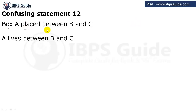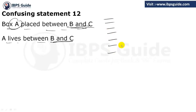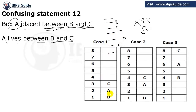The twelfth statement: box A is placed between B and C. Such statements also appear in seating arrangement puzzles. A is between B and C — what does it actually mean? Suppose B is here and C is here, A must be between B and C, so A can be here, can be here, or can be here. Most students make A adjacent to C, but that is wrong because between means anywhere between B and C. Both positions — B above or B below — are possible depending on the arrangement.